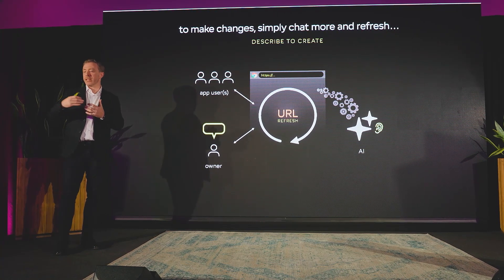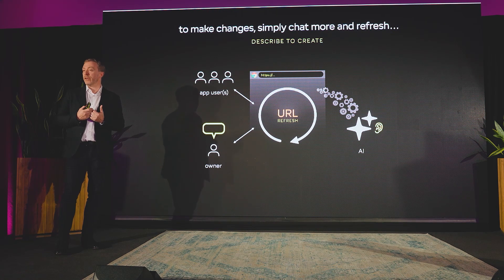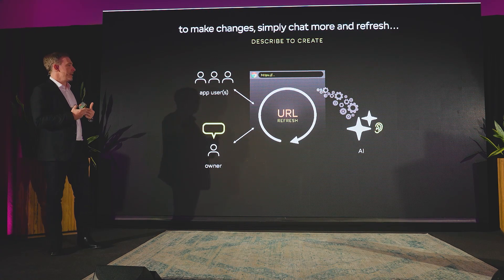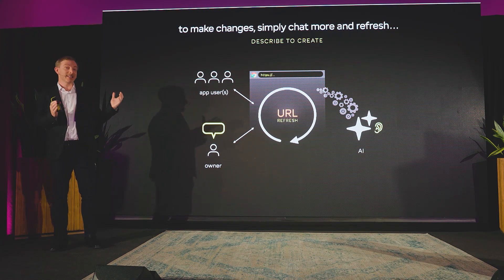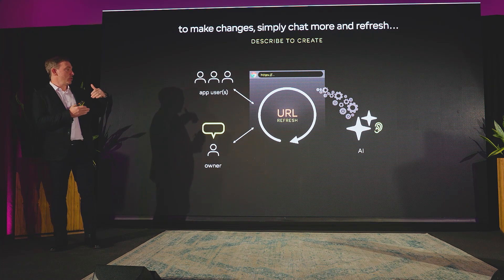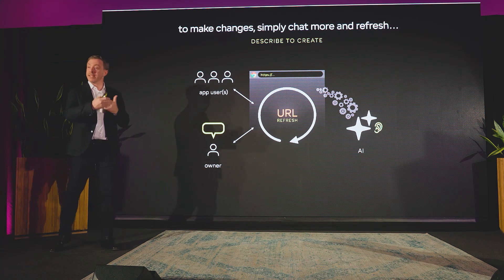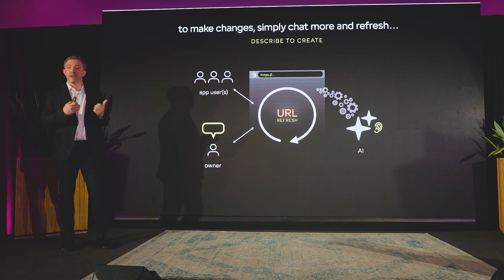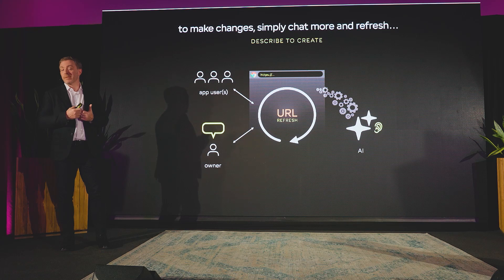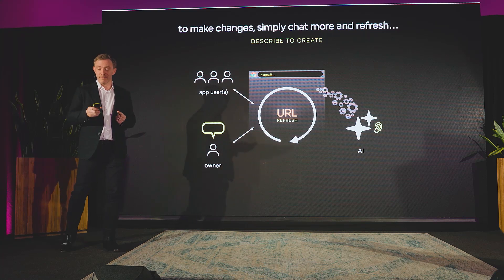This is never a one-shot process. You're going to want to use that in production and continually evolve it. You'll continue talking to the internet — talking to an AI built into the internet — and just keep refreshing the URL to see the changes. You'll be able to update, improve, and evolve running web applications and internet services that have a few users, hundreds of users, thousands of users, or even perhaps millions of users.